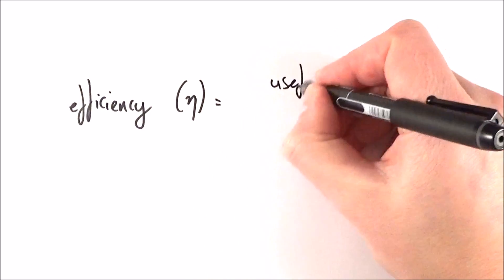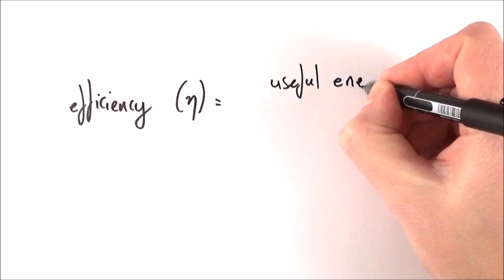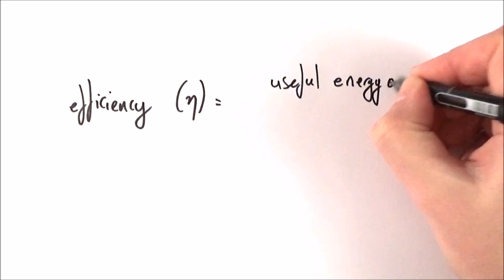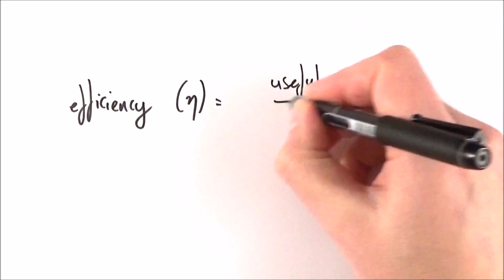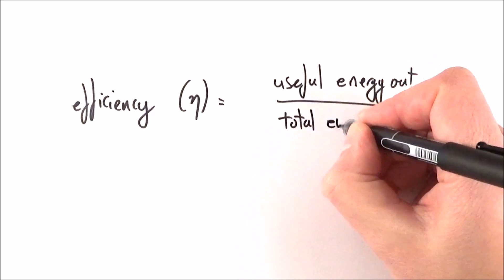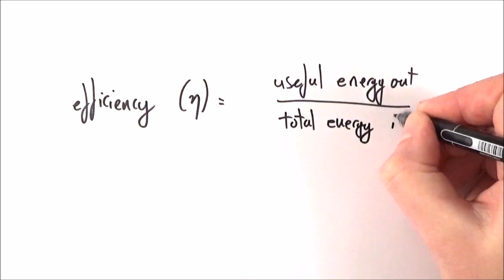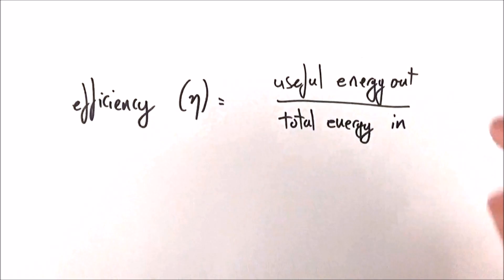In order to get it as a percentage, we multiply by 100, and that will give you the percentage efficiency of a device.